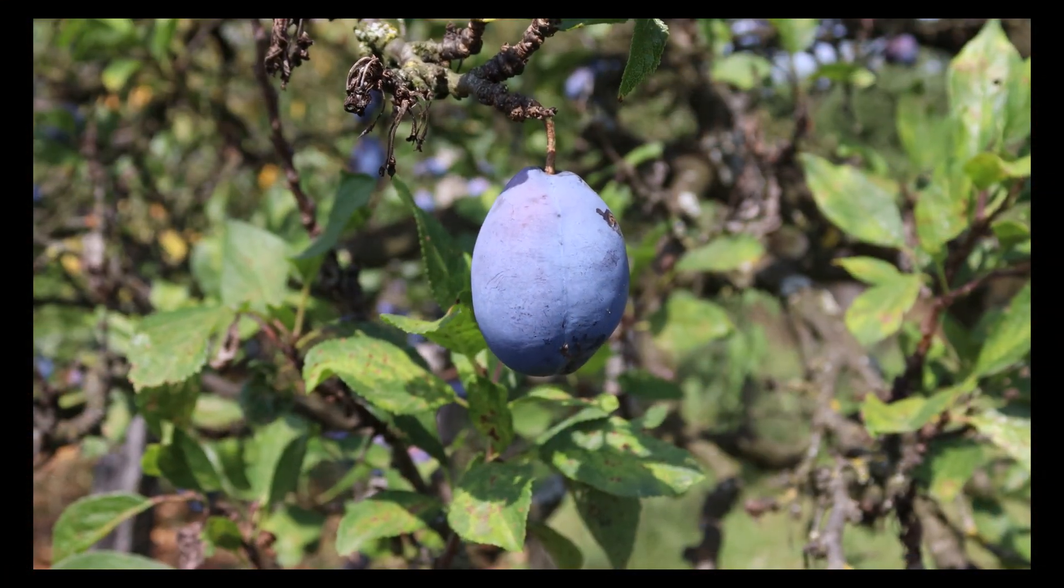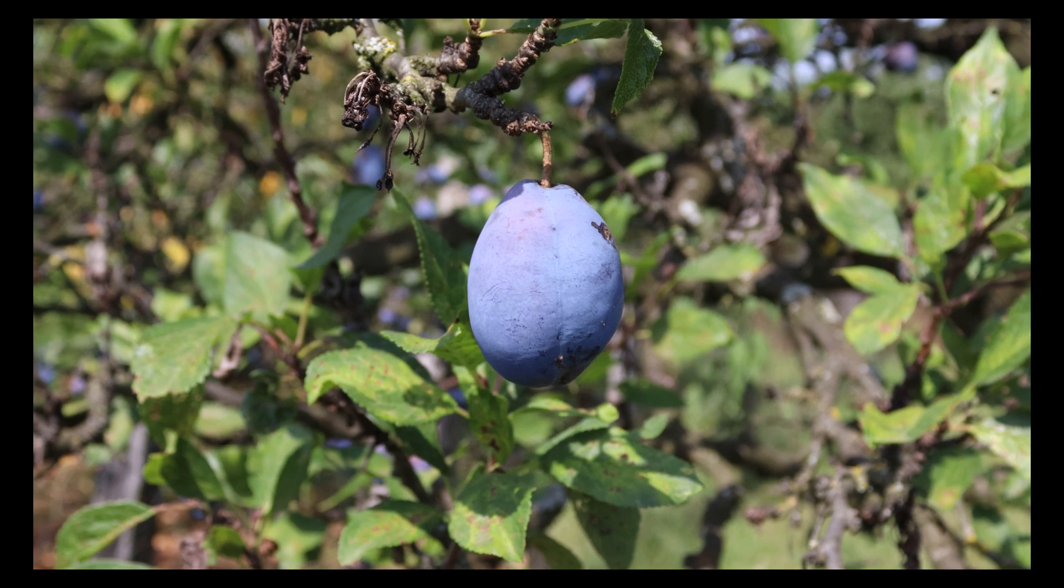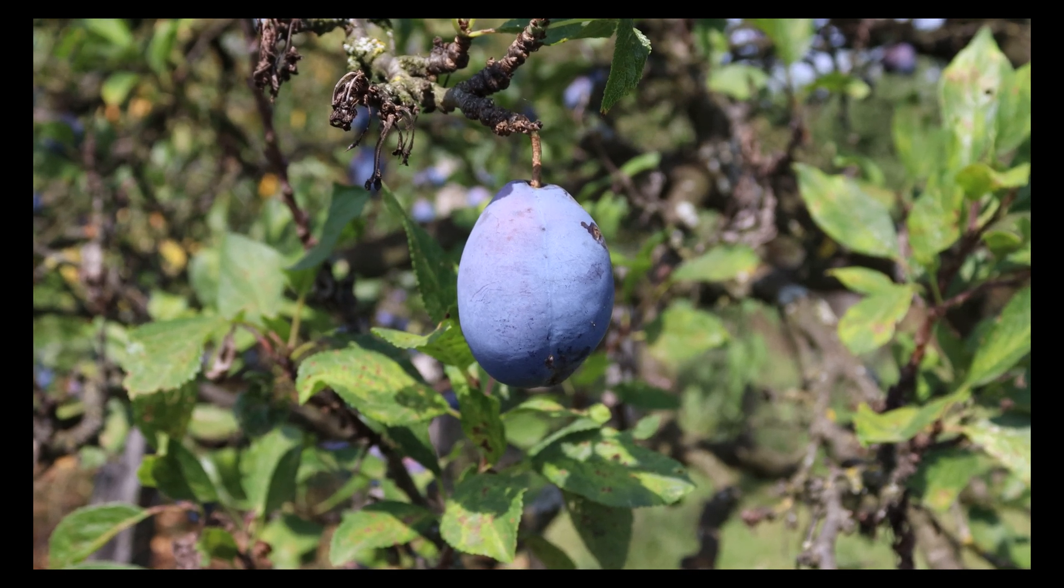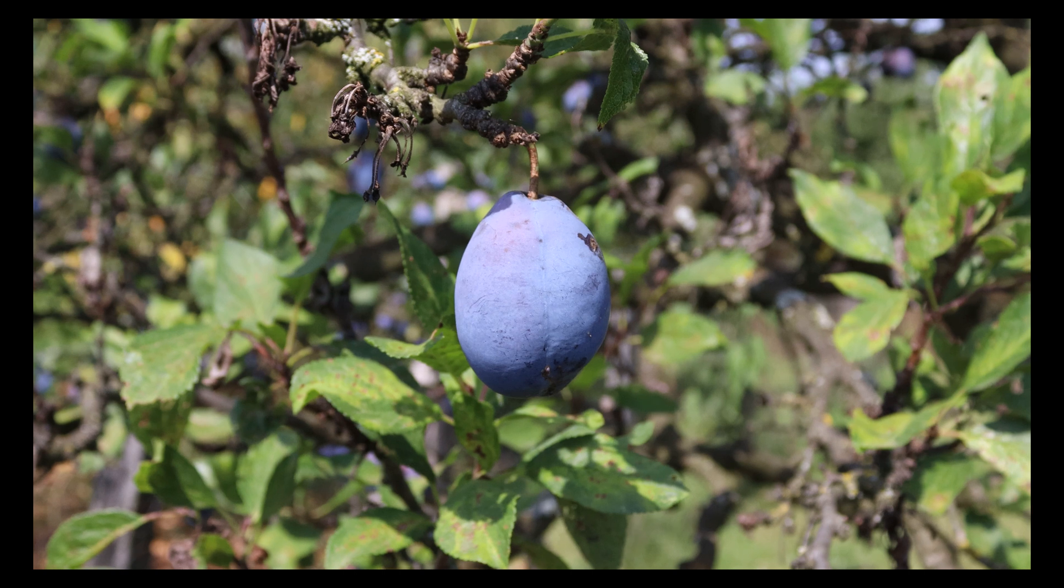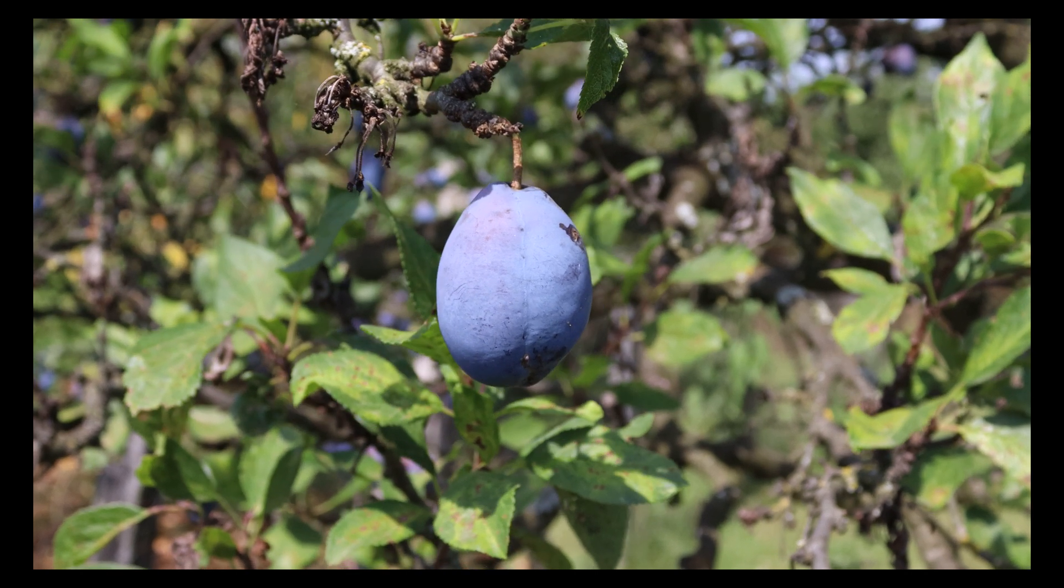First you'll need your plums. You'll want about 500 grams or about 1 pound of plums for every liter of fermentation you want to make. Note that this is before any processing is done.